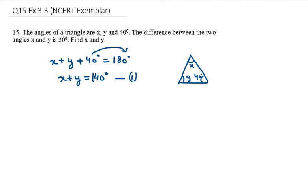Now the difference between the two angles is 30 degrees. That means x minus y equals 30 degrees. This is equation number 2.